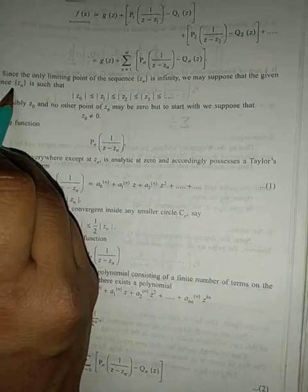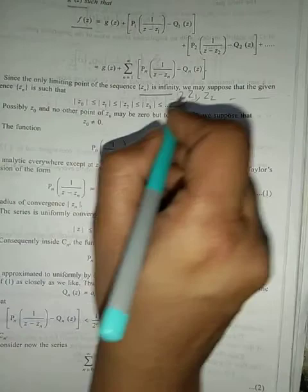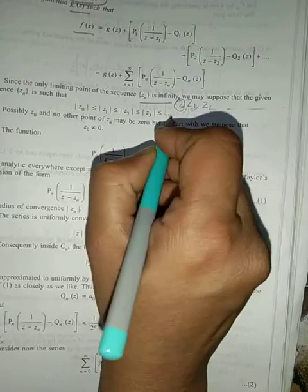Prove: since the only limiting point of zₙ is infinity so we may suppose that the sequence is such that these all poles |z₀| is less than |z₁|, |z₁| is less than |z₂| and so on because the limit point is infinity.